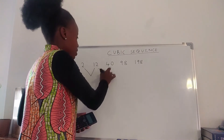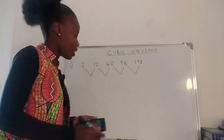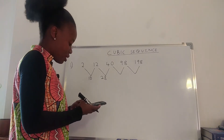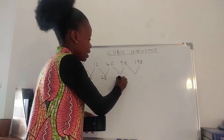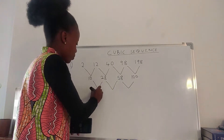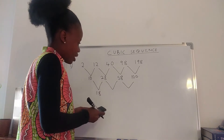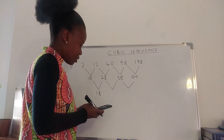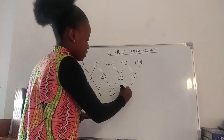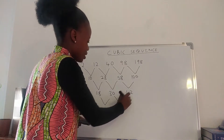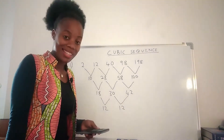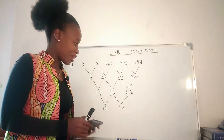Let's check if our sequence is a cubic sequence. We have 10, 28, 98, minus 40. The first differences are 18, 58, and 100. The second differences are 18, 30, and 42. The third differences are 12 and 12 — the third difference is the same, so it's a cubic sequence.